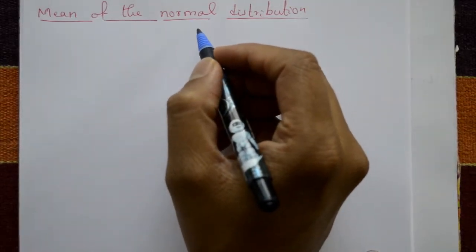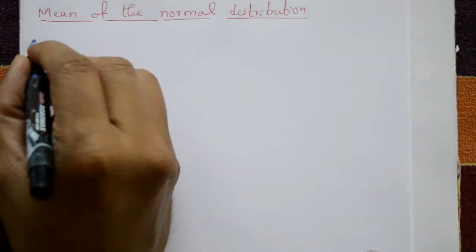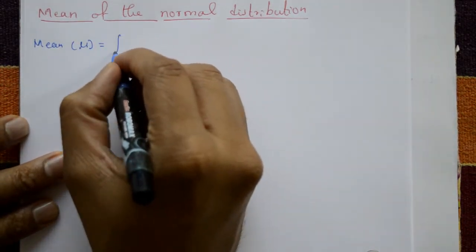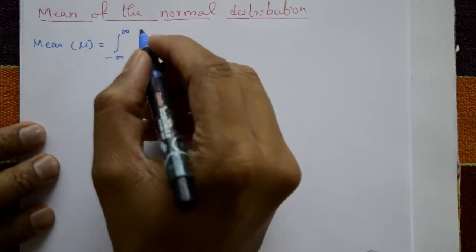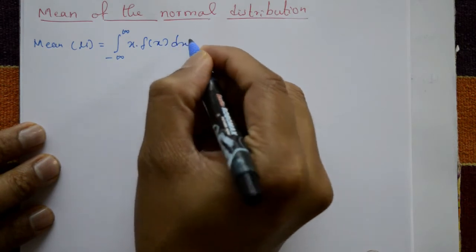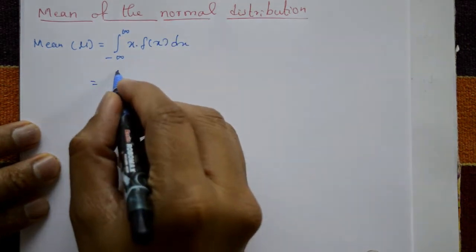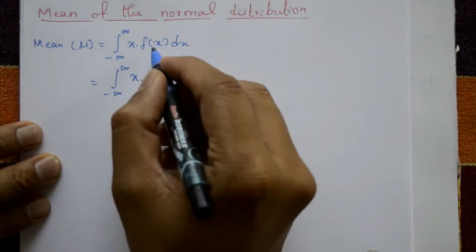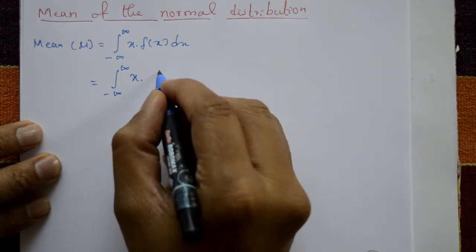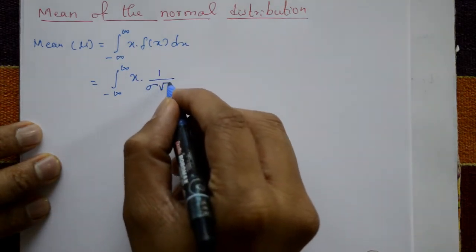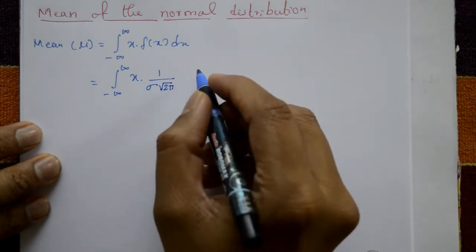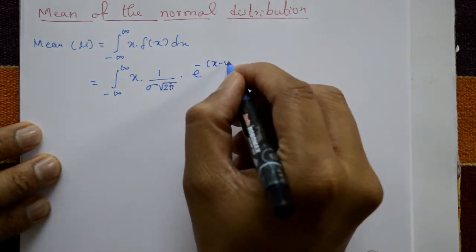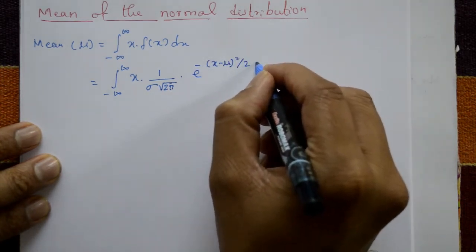Mean of the normal distribution. The mean is mu, where mu is equal to the integration from minus infinity to plus infinity of x times f(x) dx. Here f(x) is the normal distribution: f(x) equals 1 over sigma times square root of 2 pi, times e to the power of minus (x minus mu) whole square divided by 2 sigma square.